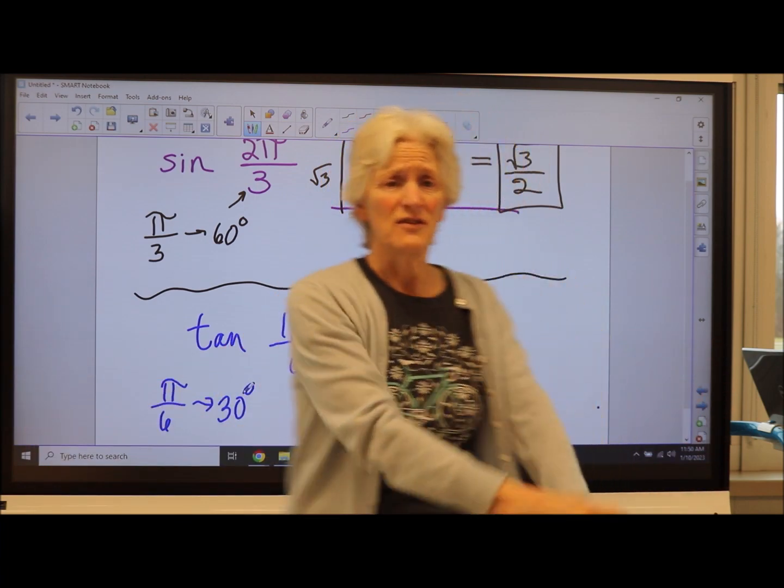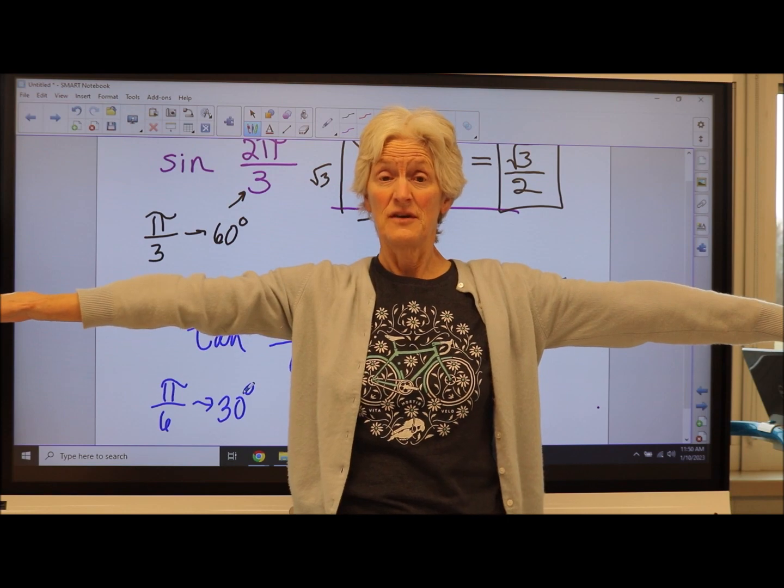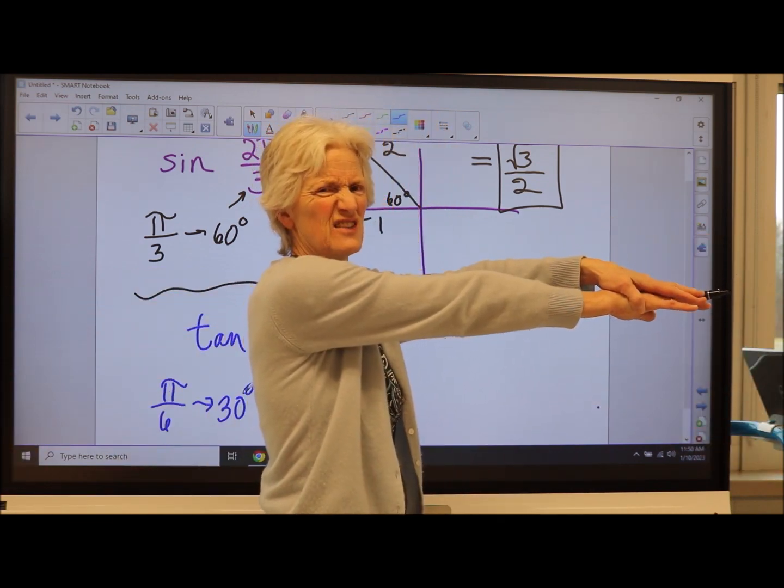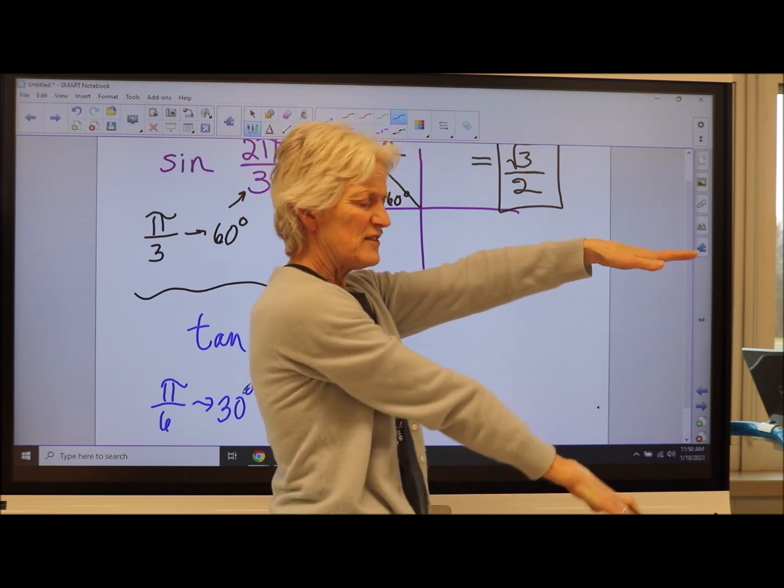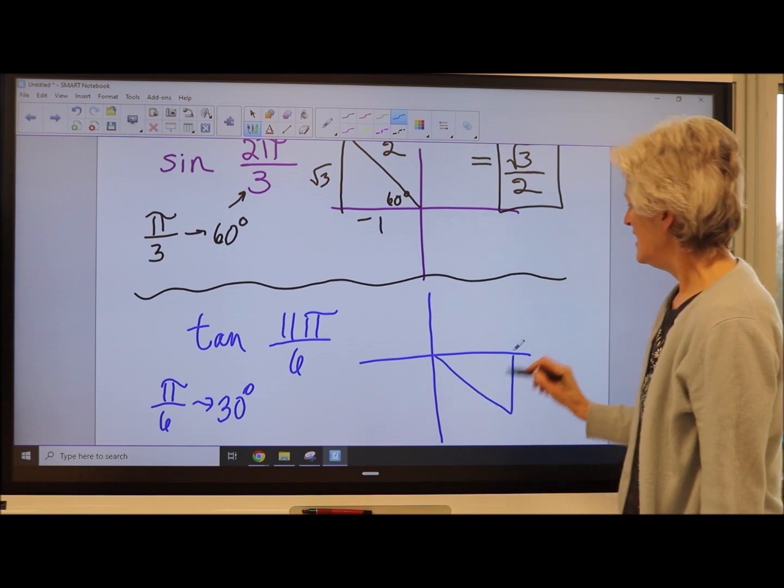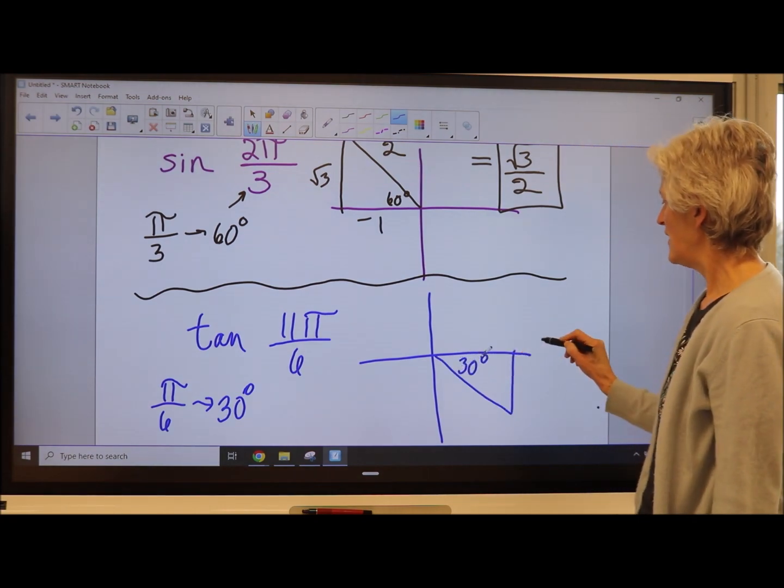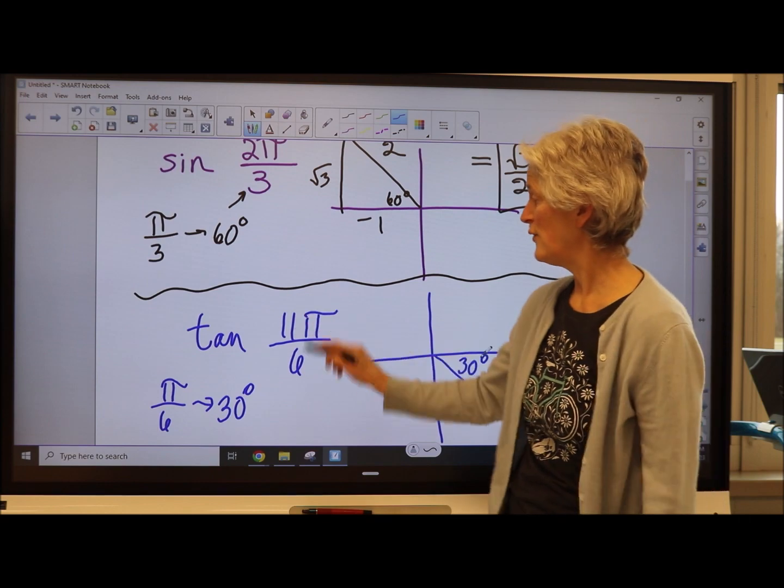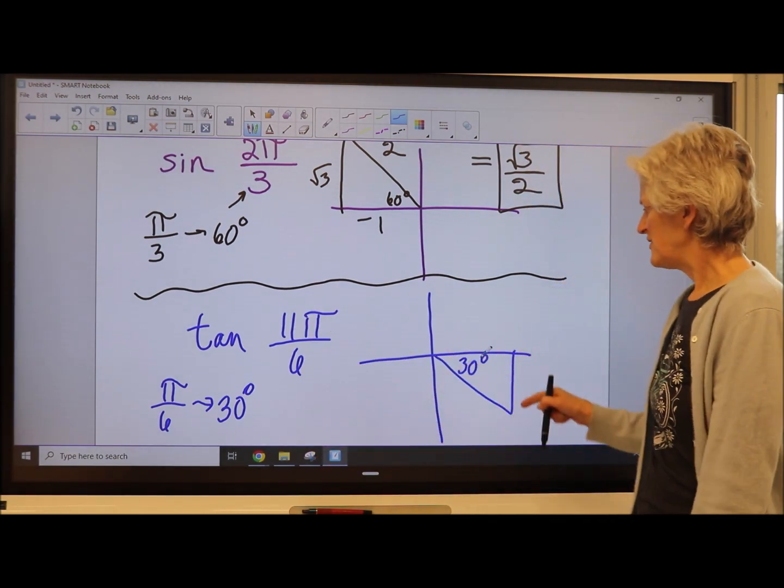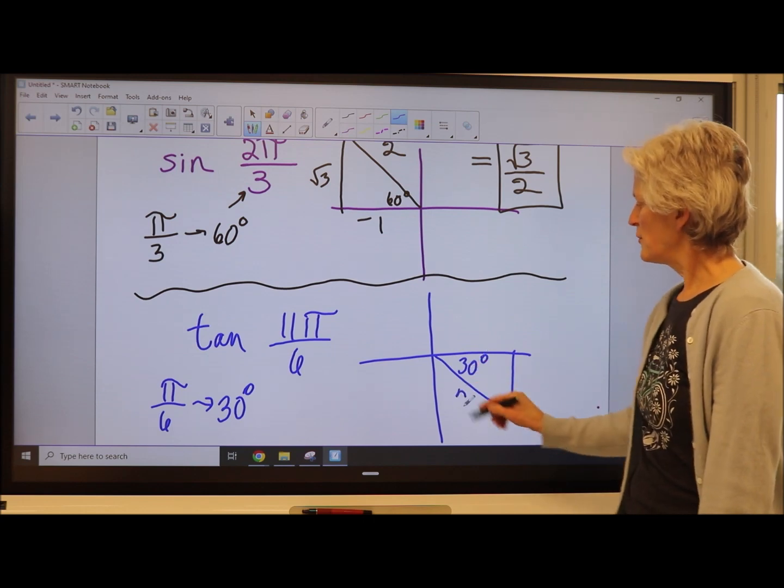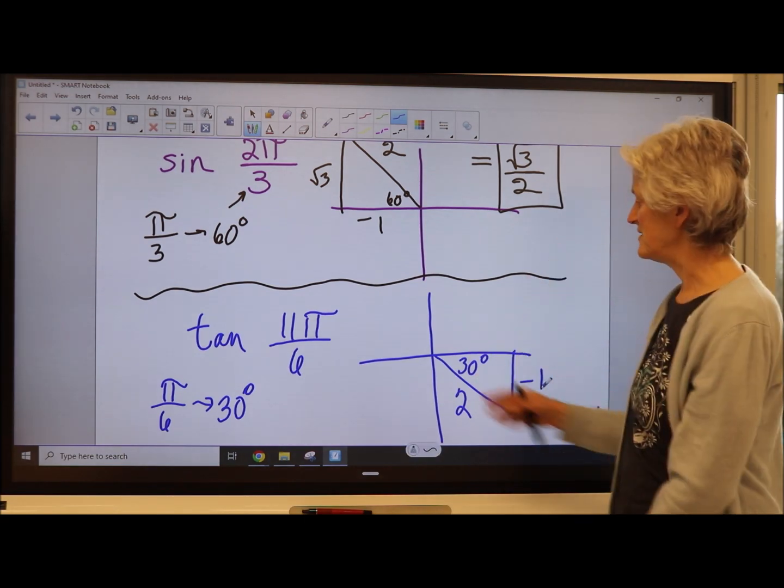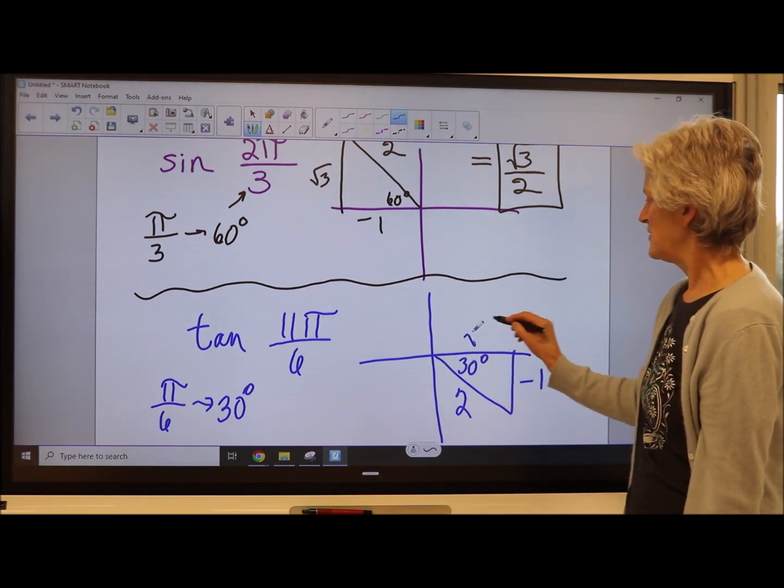11 sixths. Well, you could do, let's see, this is six sixths, this is 12 sixths. 12 divided by 6 is 2, 2 pi. So 11 sixths is going to be in the fourth quadrant, just shy of 2 pi, 12 over 6. You see how nice this is? I have a 30, 60, 90. I'm going to call the radius 2, opposite the 30 is the 1. It's going to be a negative 1 since I'm going down. This is going to be square root of 3.